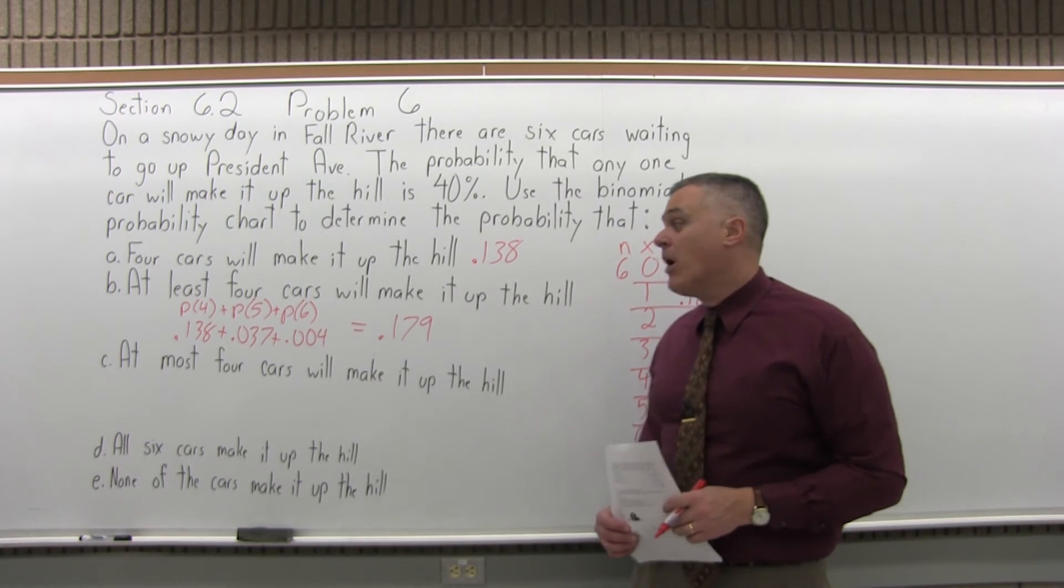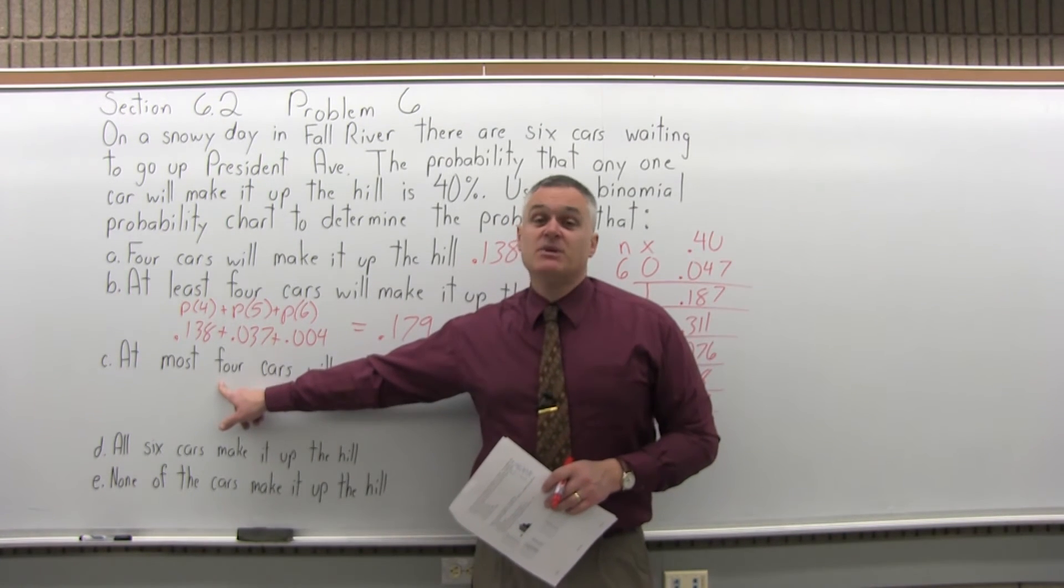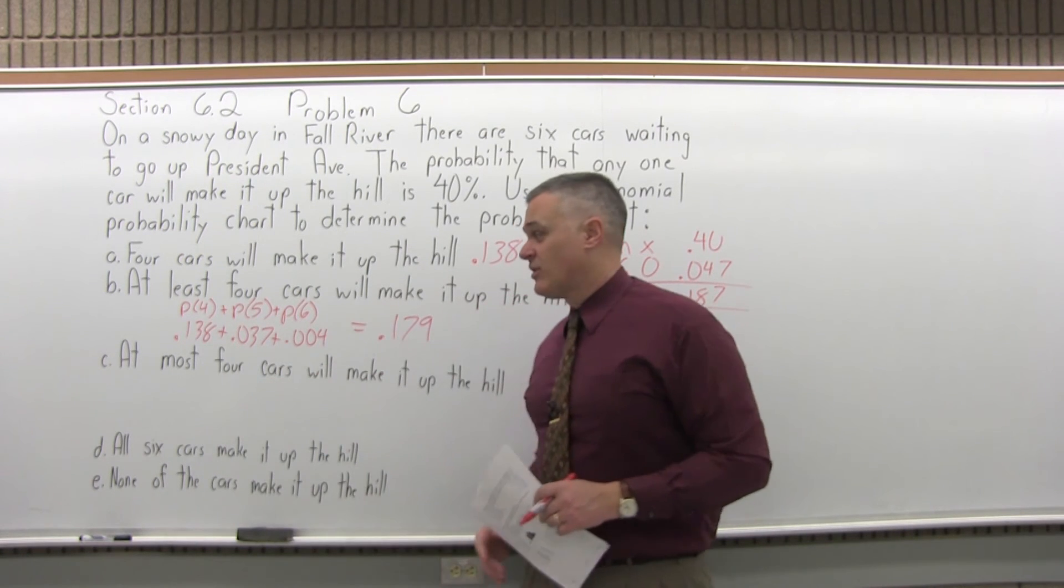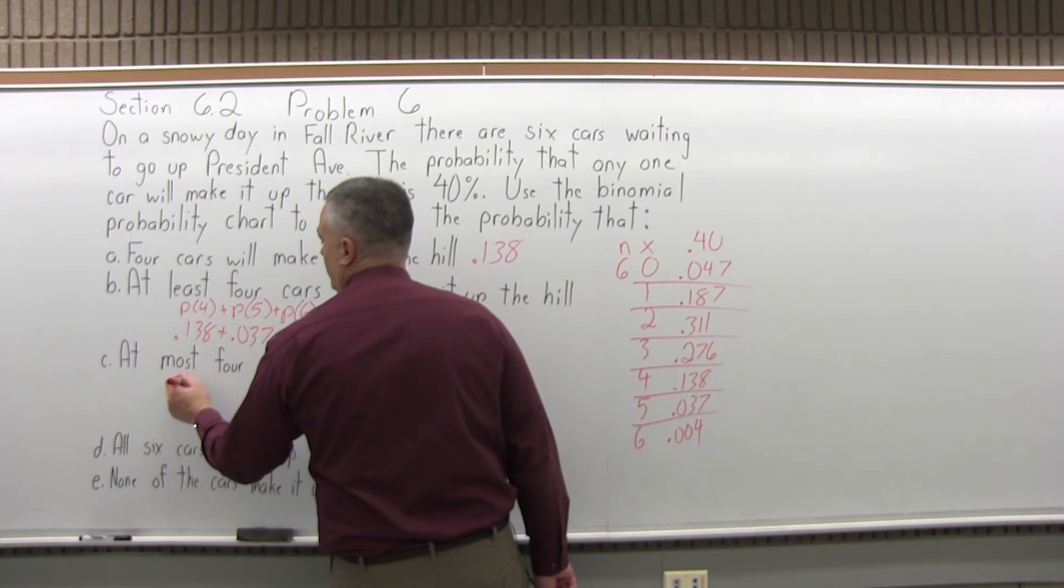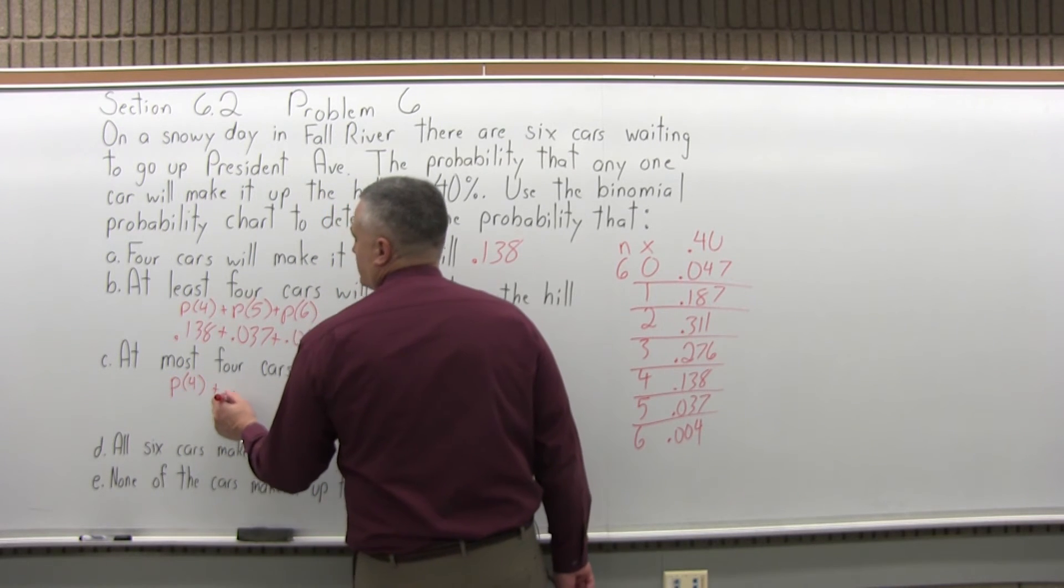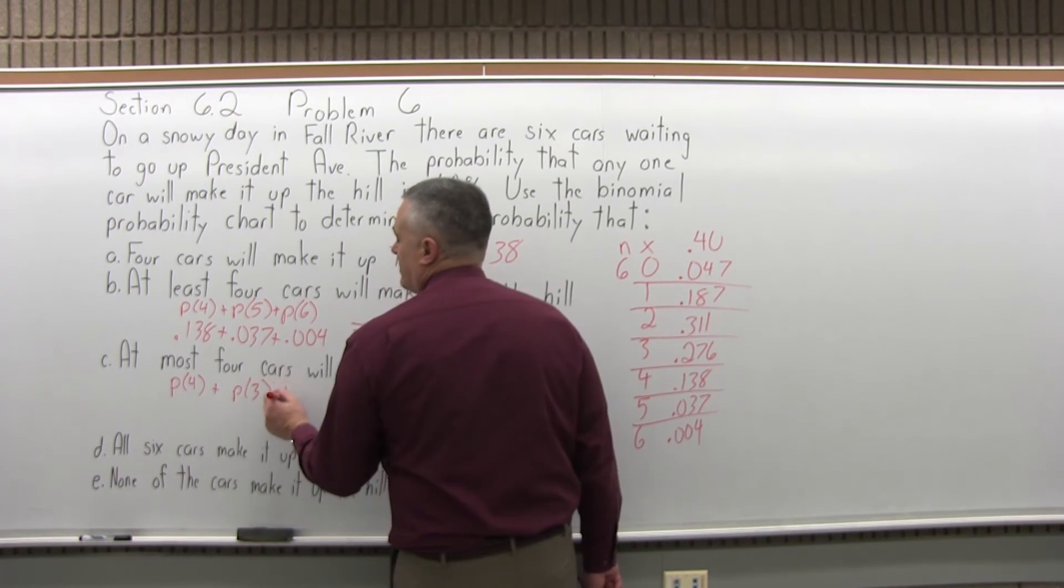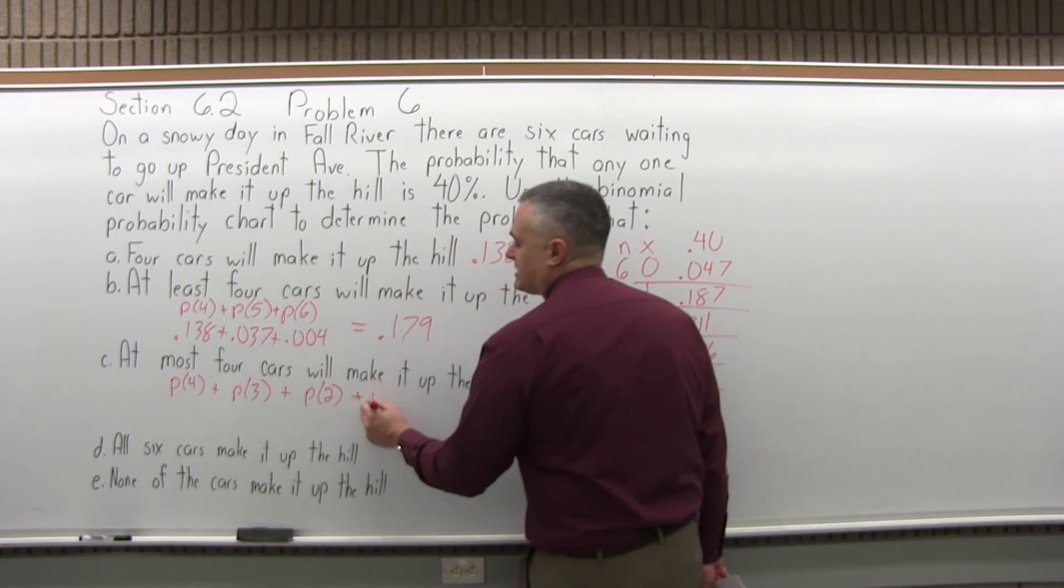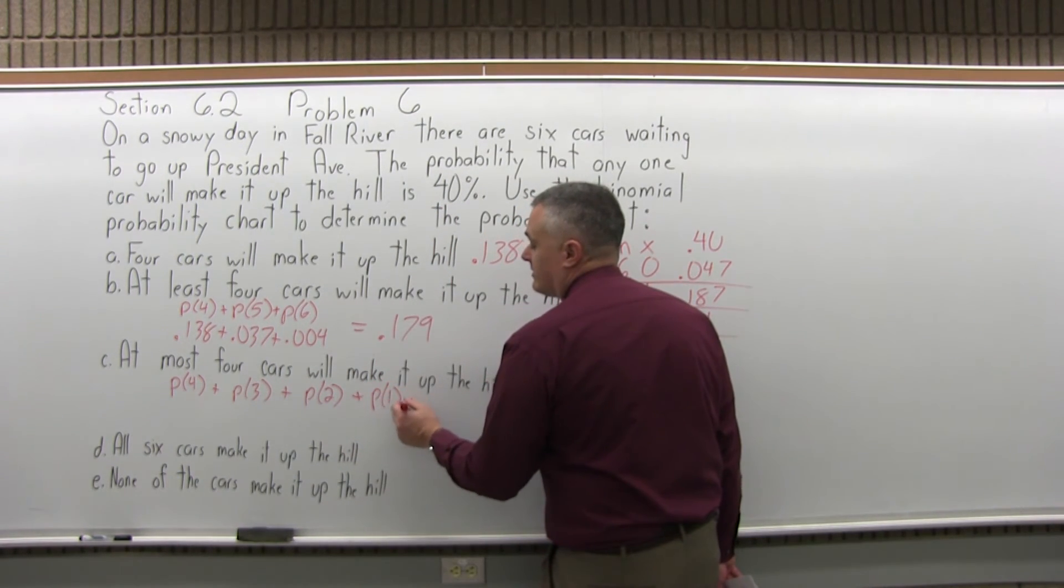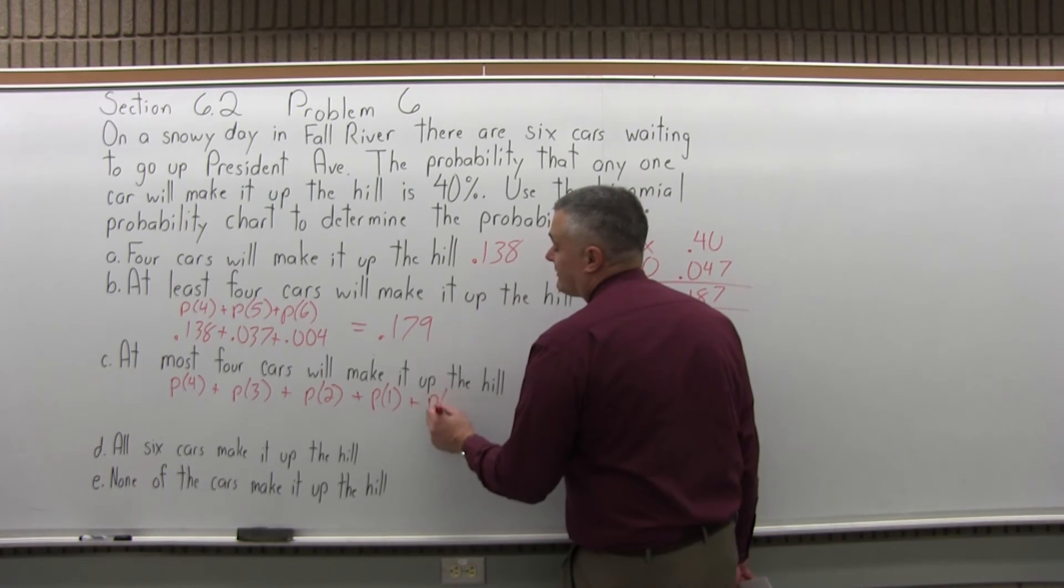For at most four cars, that means four is the most. It's four or less. Four or fewer. At most four cars would be the probability for four, plus the probability for three, plus the probability for two, plus the probability for one, don't forget, plus the probability for zero.